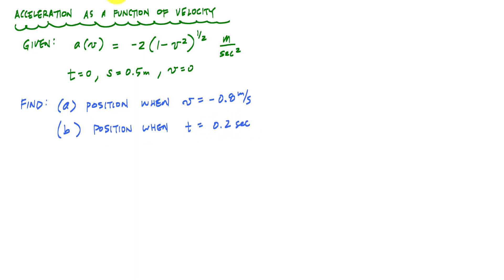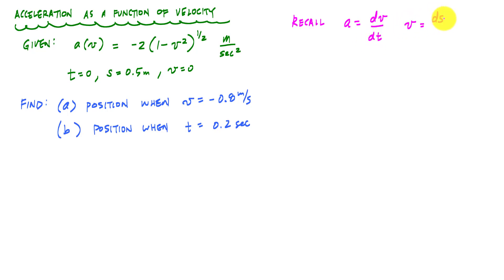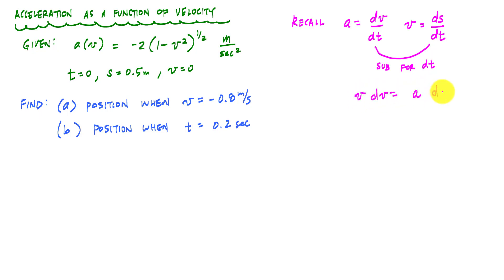As a quick recap of the basic relationships associated with 1D motion: the acceleration is dv/dt, and the velocity is ds/dt. Substituting out time, we get that v dv is equal to a ds.